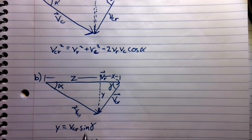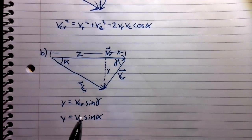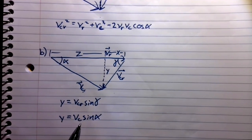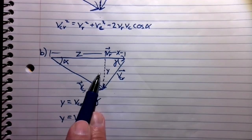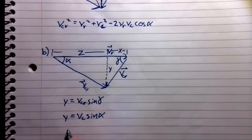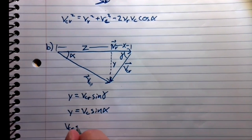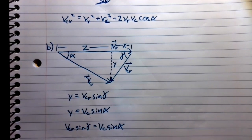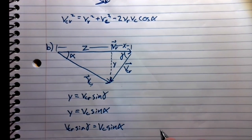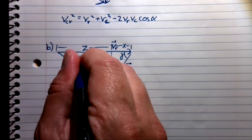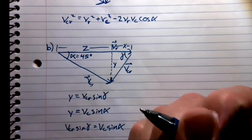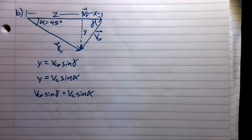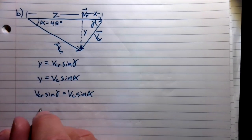We know what sine of alpha is. Now we can set these two equal to each other: VCR times sine of gamma equals VC times sine of alpha. We know the angle — alpha equals 45 degrees.